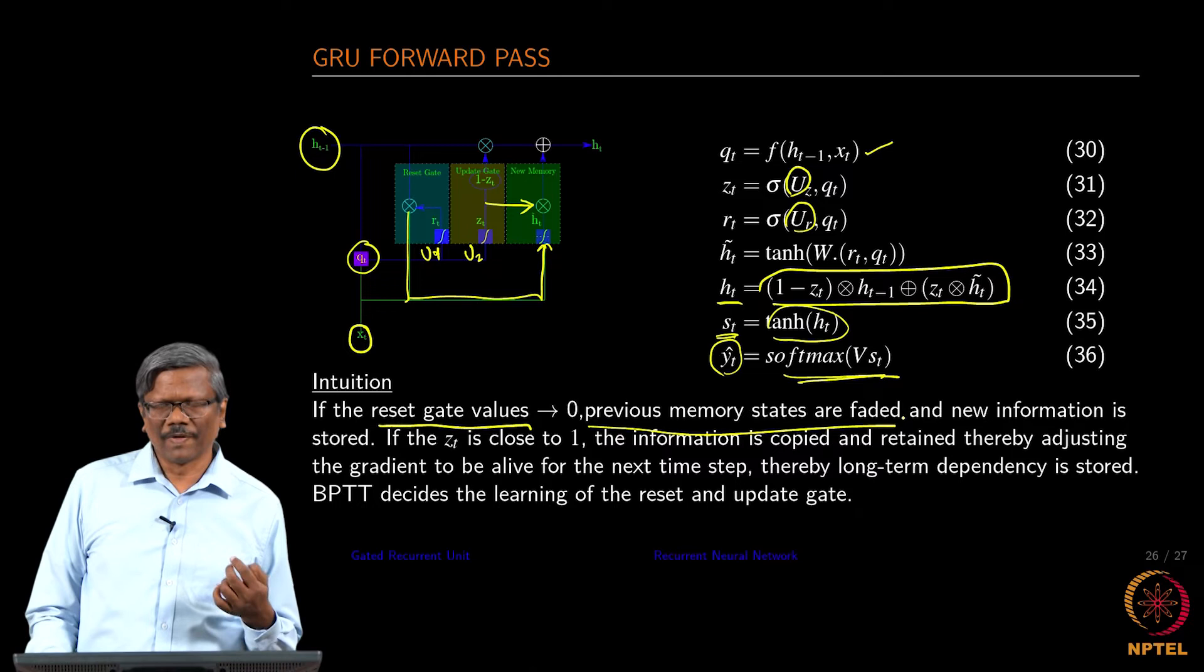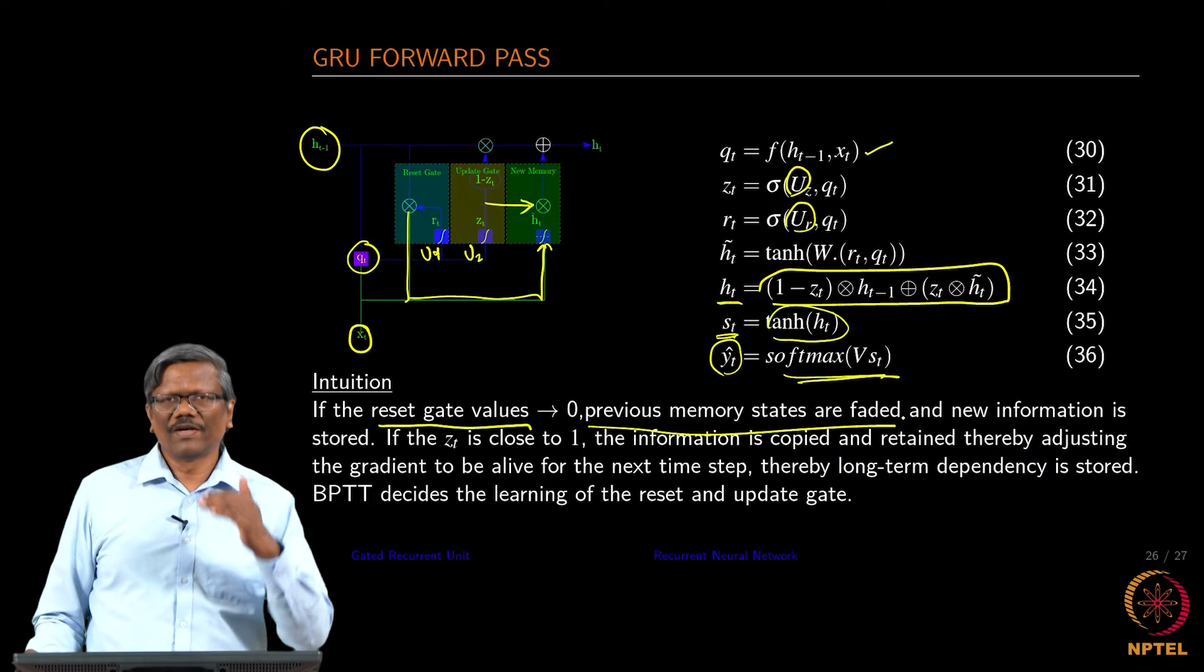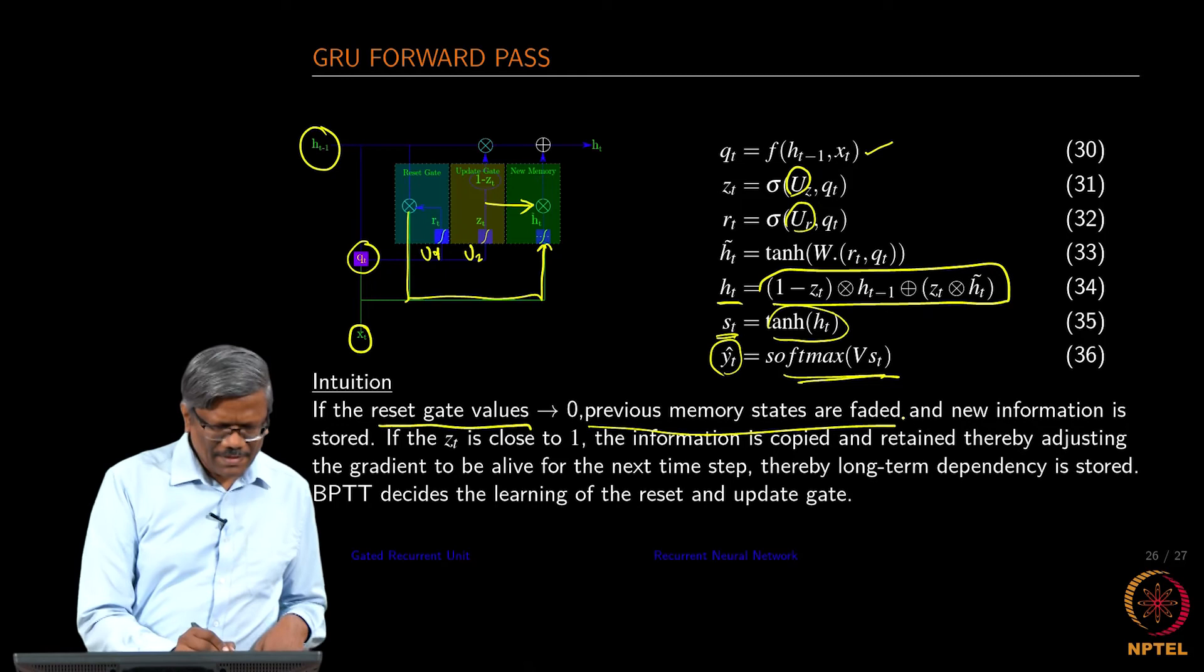When you do the element-wise multiplication, the values would become smaller or it would get boosted up.